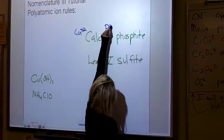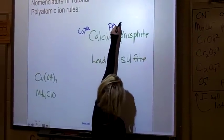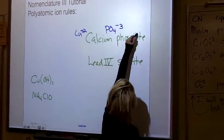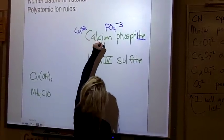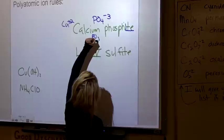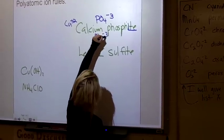which is PO4^3-. But 'ite' is always one less oxygen, so it would be PO3 and the charge would stay the same, minus 3.